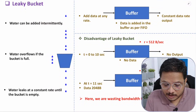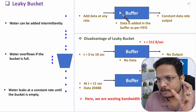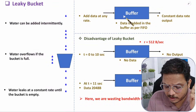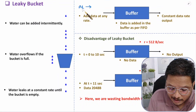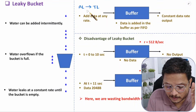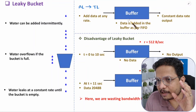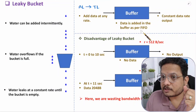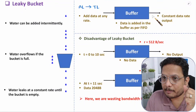In networking terms, instead of a bucket you have a buffer — a memory space. The window size defined during connection establishment is the buffer capacity C. Data can be added to this buffer at any rate, since the application layer adds data to the transport layer at any rate. The buffer has capacity C defined during connection establishment. Data inside the buffer is added and removed as per FIFO (first in, first out), and the output happens at a constant data rate.